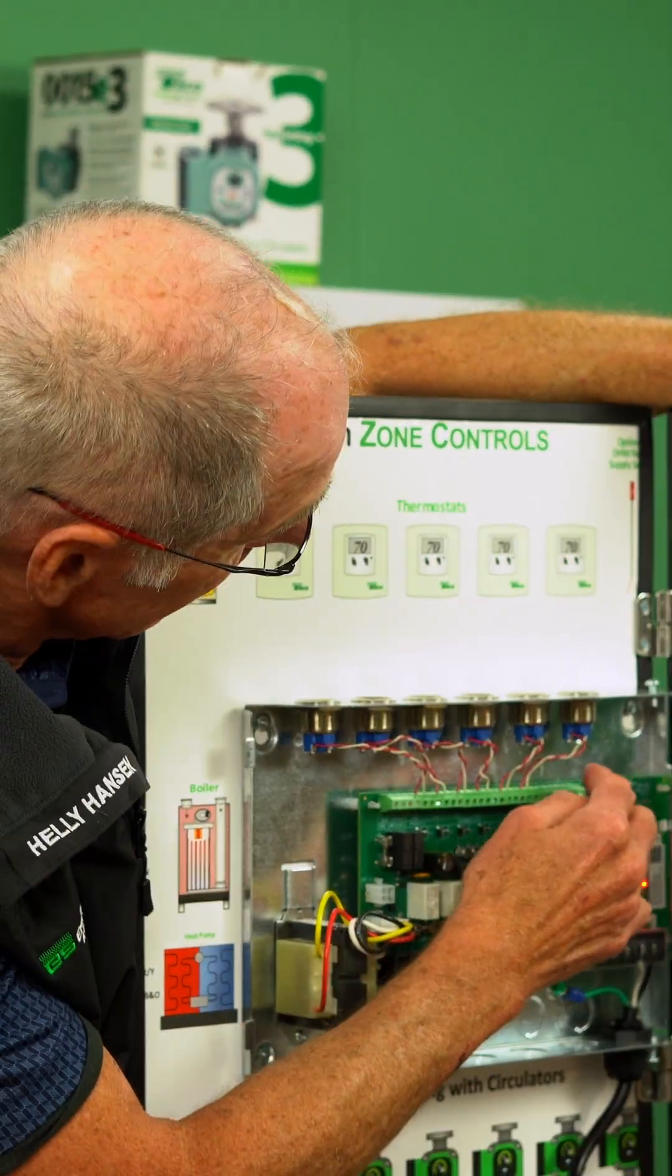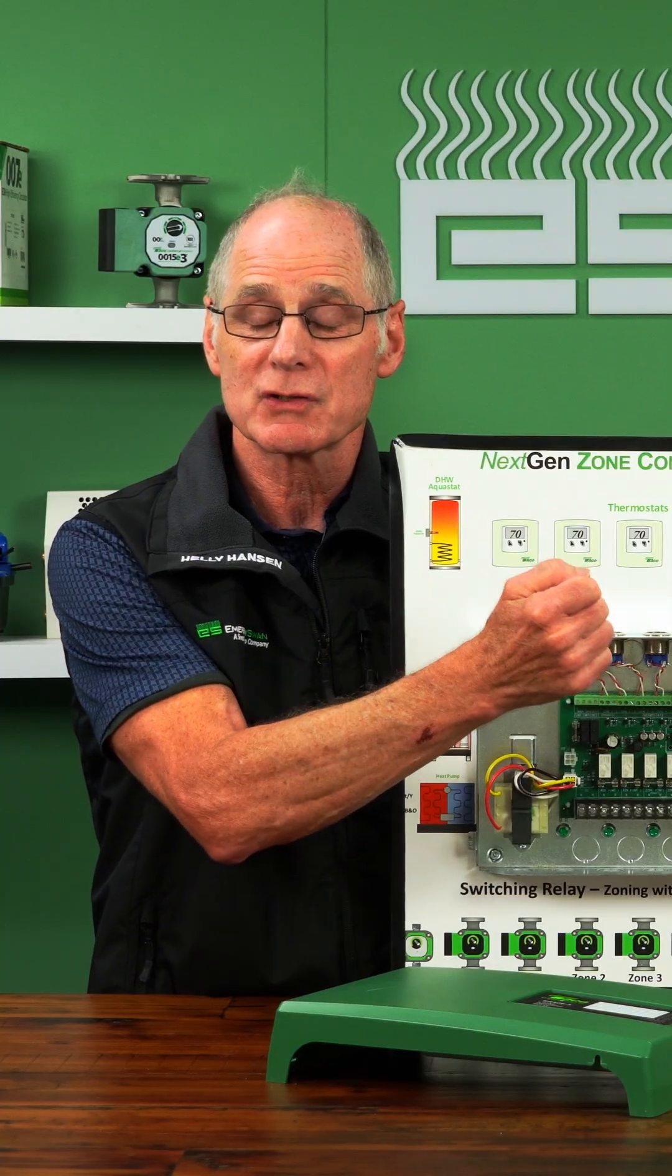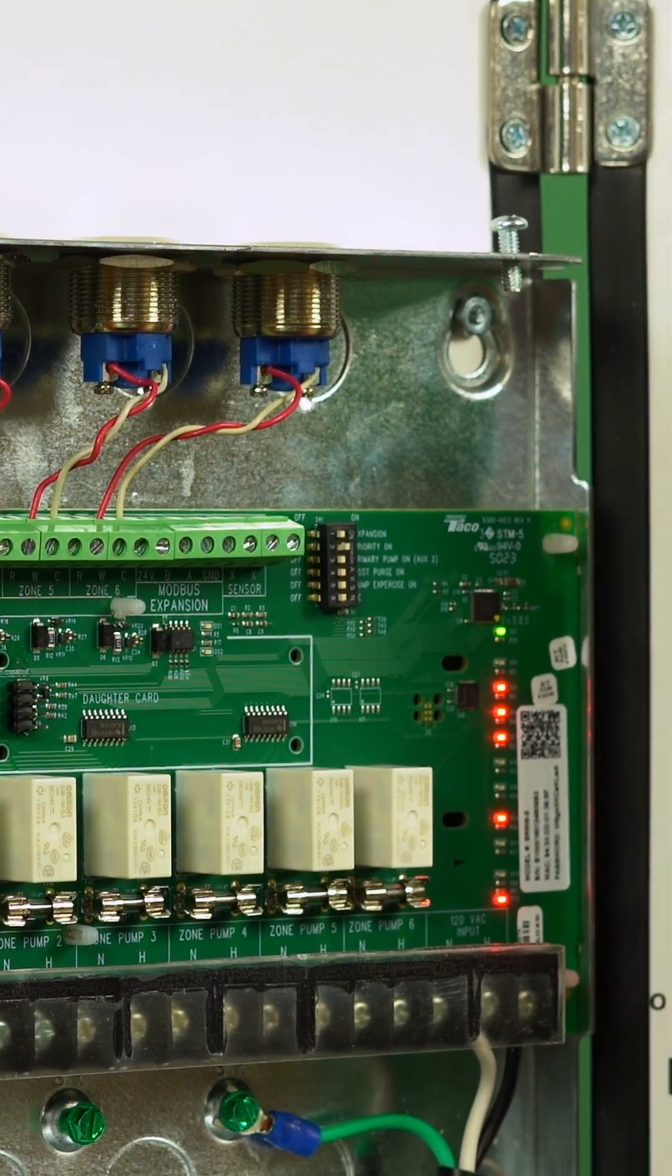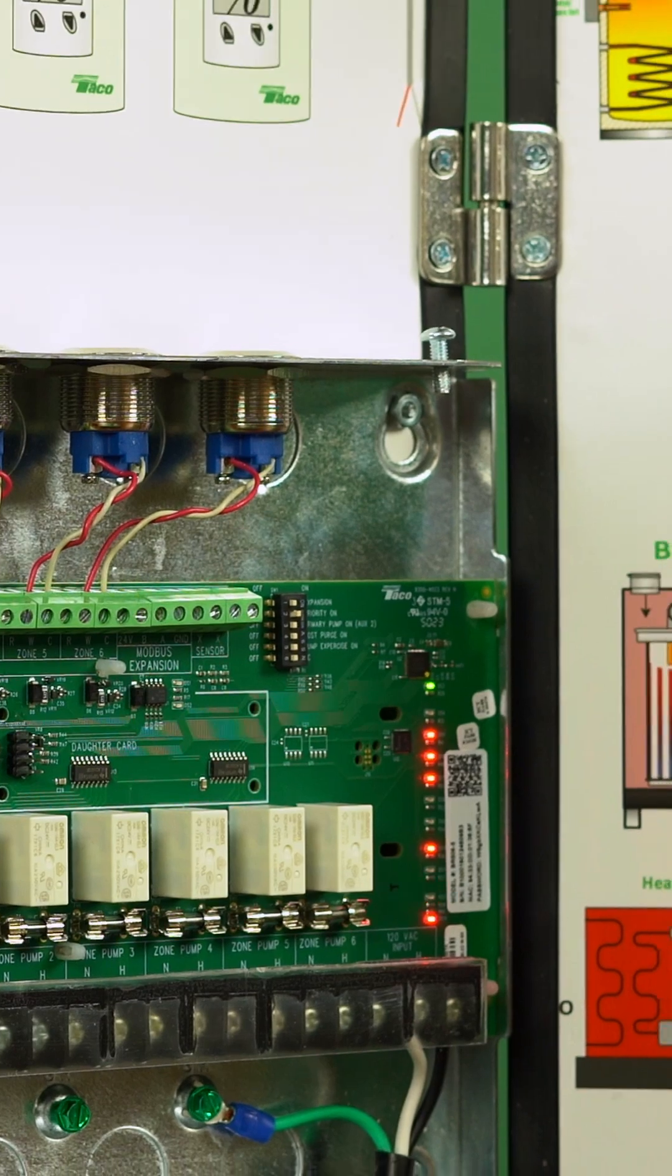There's a sensor input down here on the end. If we wire in a sensor to that, we automatically assign one of our auxiliary outputs to handle a domestic recirc application.